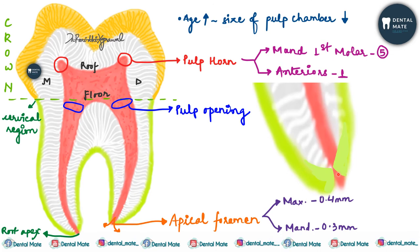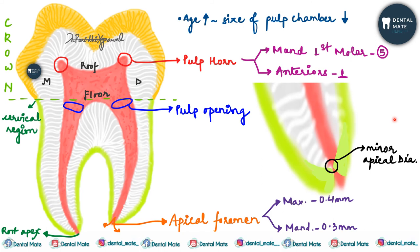The shape of the apical foramen keeps changing due to the functioning of the tooth. It has two openings — a minor diameter and a major diameter — giving it an hourglass shape. The narrowest portion at the terminal end of the pulp space is the minor apical diameter, whereas the terminal end of the radicular pulp communicating with the periapical space is the major apical diameter. There is approximately 0.5 mm difference between the minor and major apical diameter.